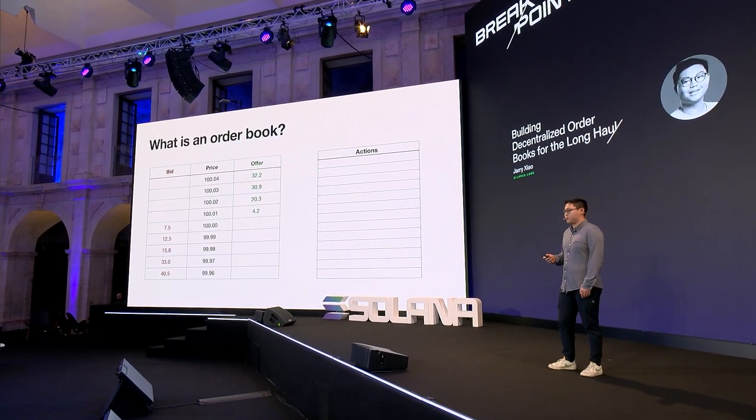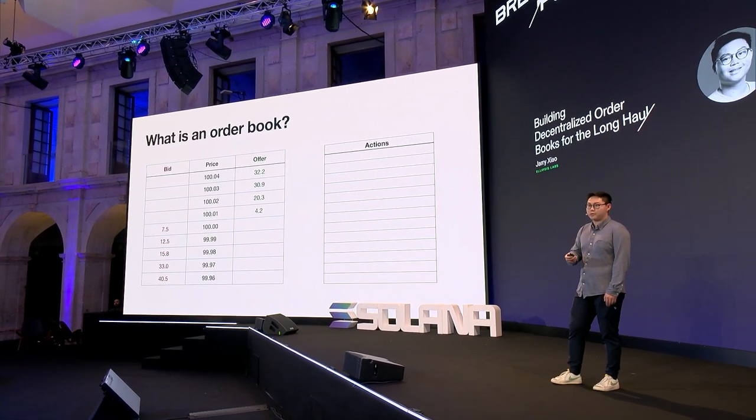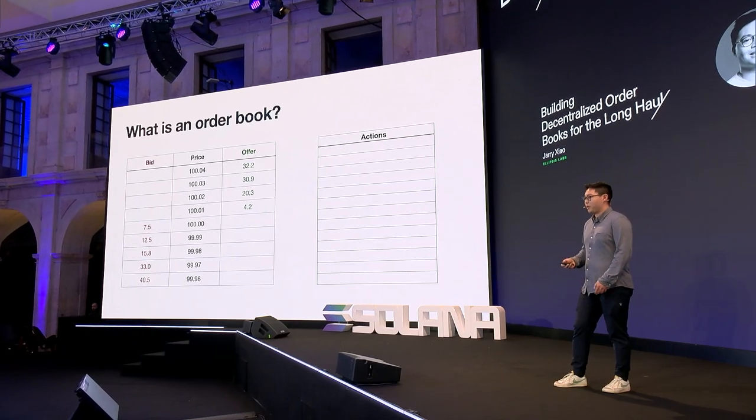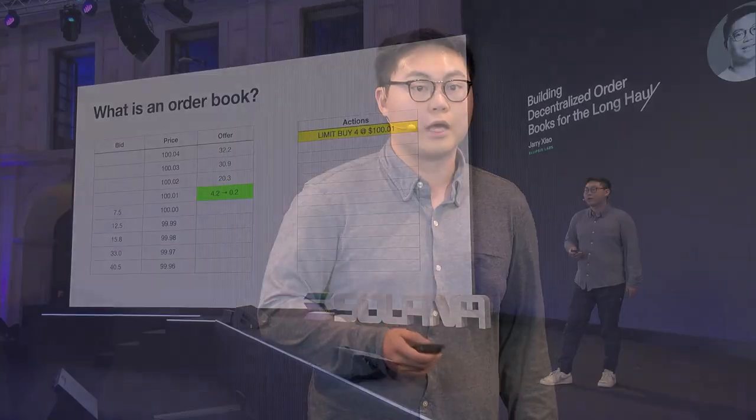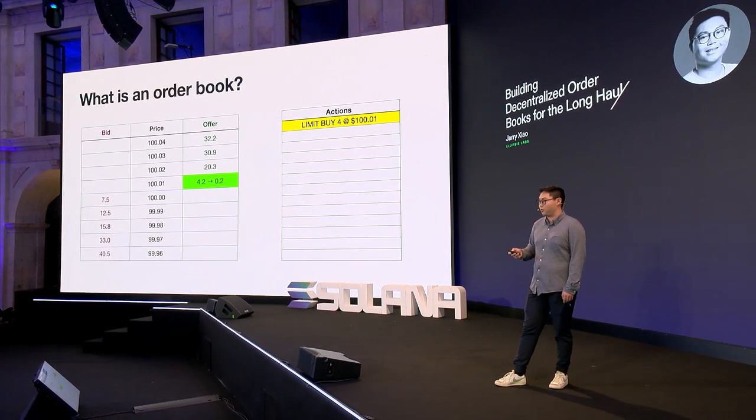For the offers, which is the other side of the book, that would be sorting the sell orders from lowest price to highest price, from least recent to most recent. When we do this, we get a market where the bids and the offers have prices that do not cross each other, meaning that the highest bid is always going to be lower than the lowest offer. Now that we have this order book, we can do a certain number of actions, one of which is to buy. Here we see a limit buy order for four of this asset at $100.01, and we see that the offer at $101.01 reduced from 4.2 to 0.2.